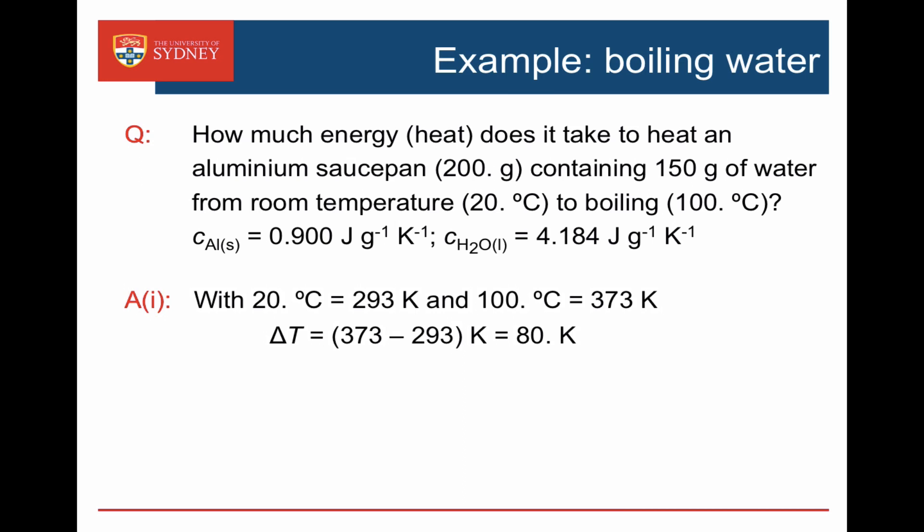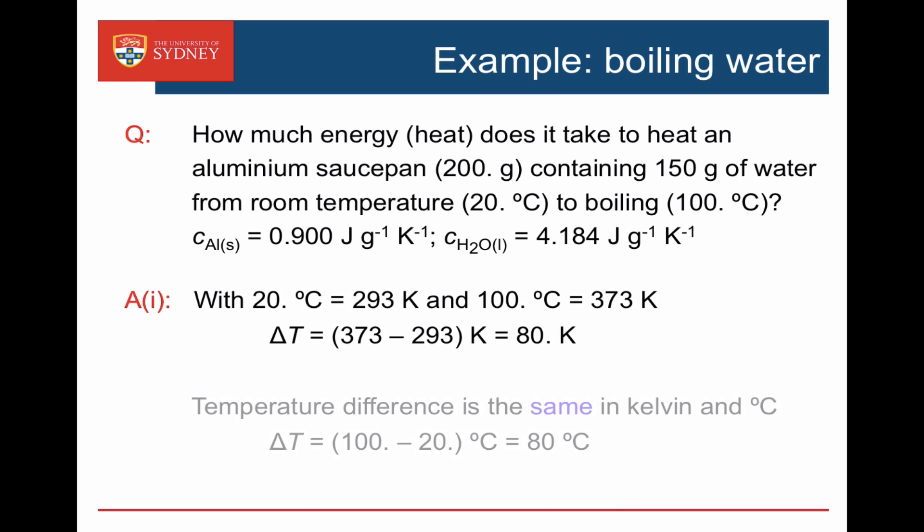First, let's work out the temperature difference. 20 degrees C is 293 Kelvin and 100 degrees C is 373 Kelvin, giving a difference of 80 Kelvin. The temperature difference in degrees C is 100 minus 20, also 80 degrees. A useful shortcut: the temperature difference in Kelvin is always the same as the temperature difference in degrees C, because adding 273 to both and then subtracting cancels out.